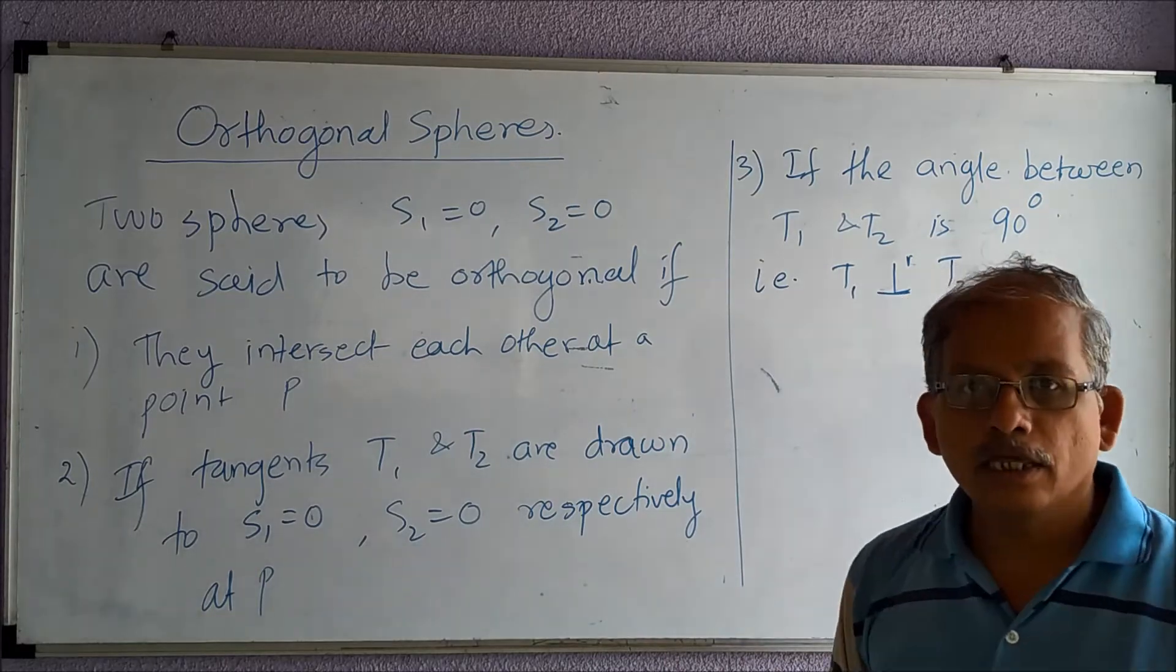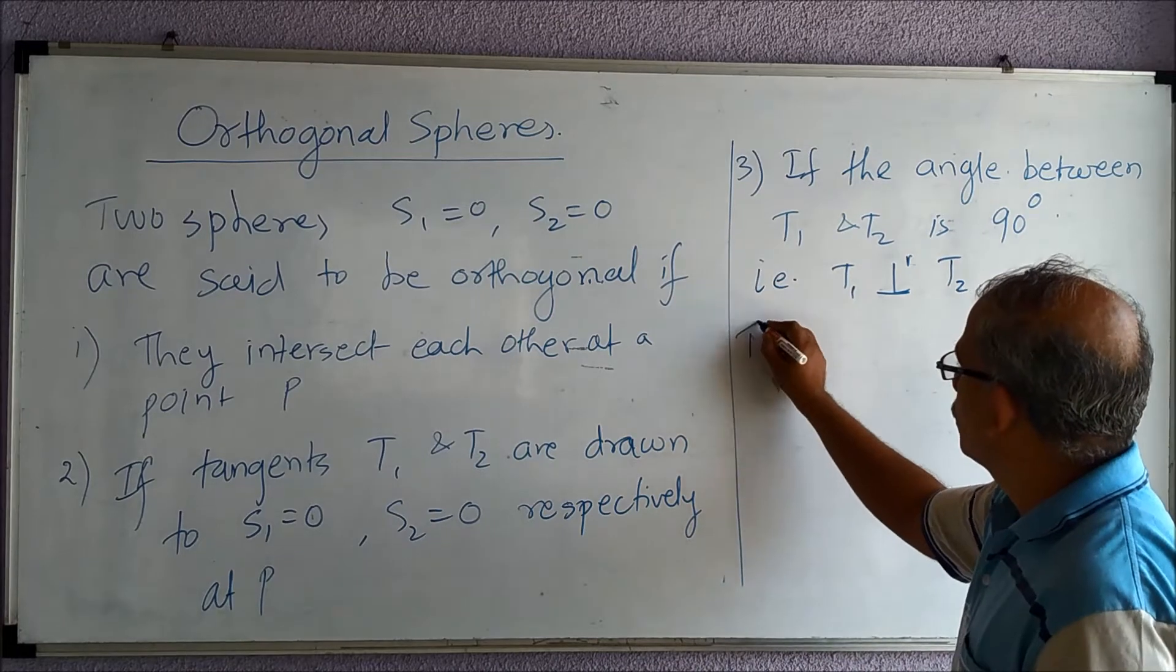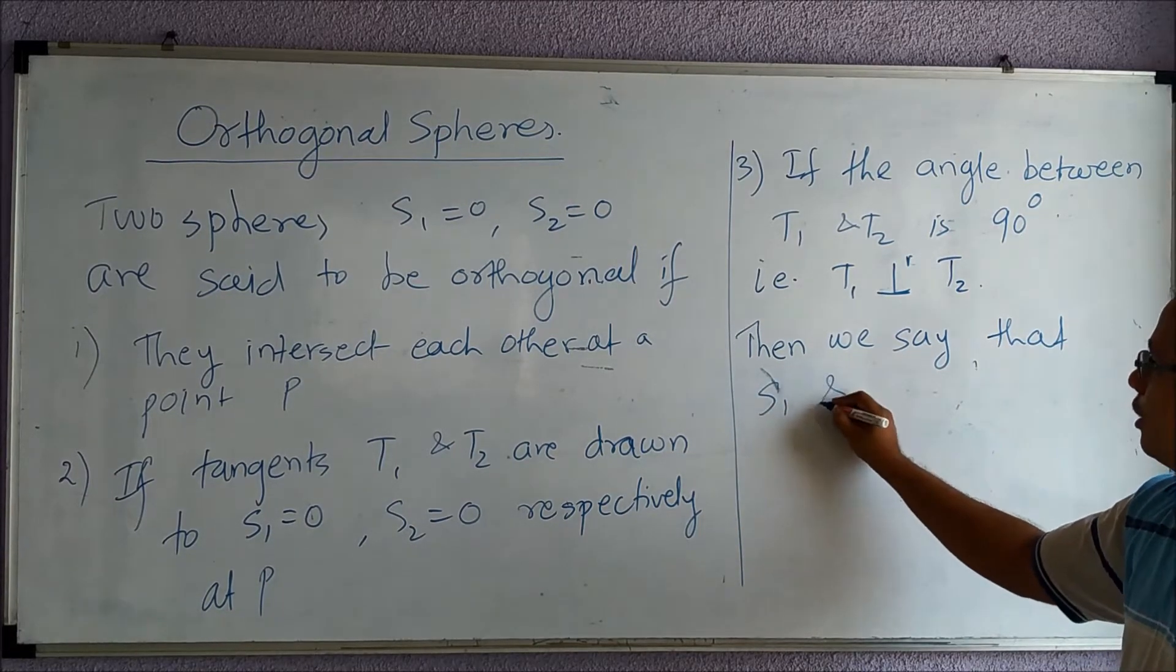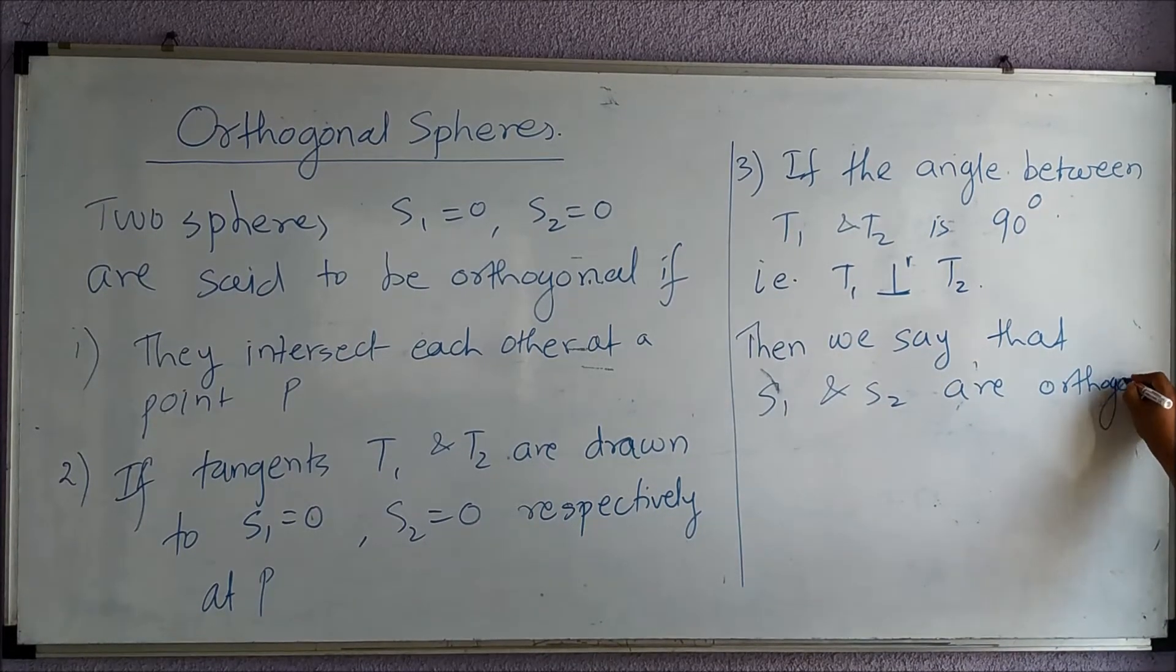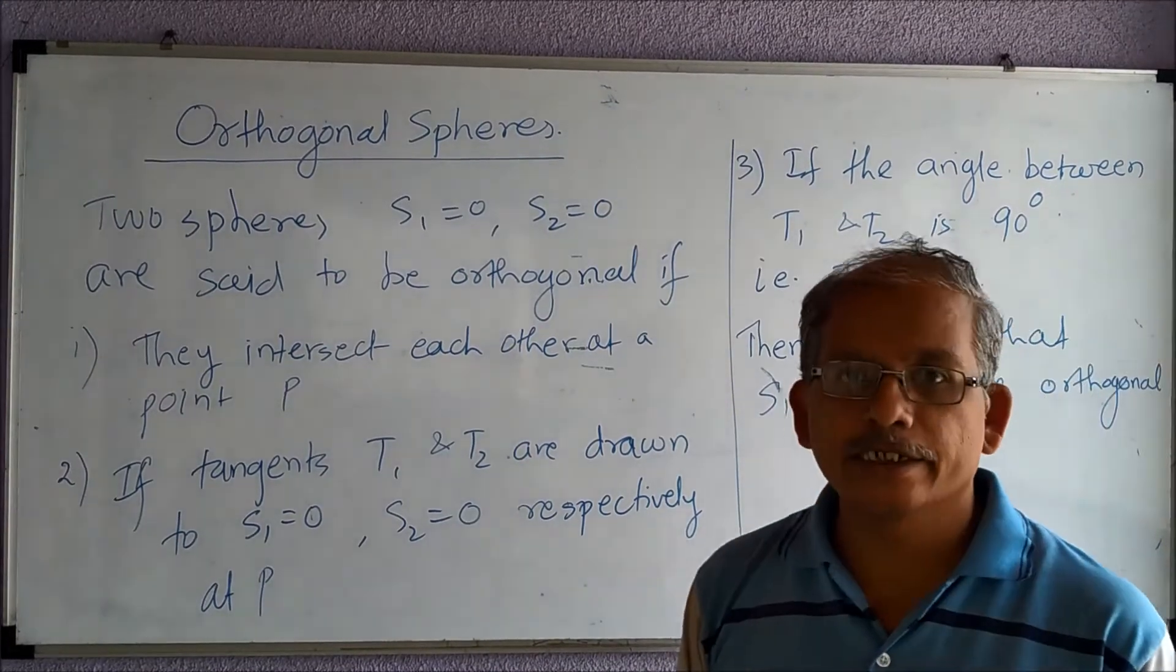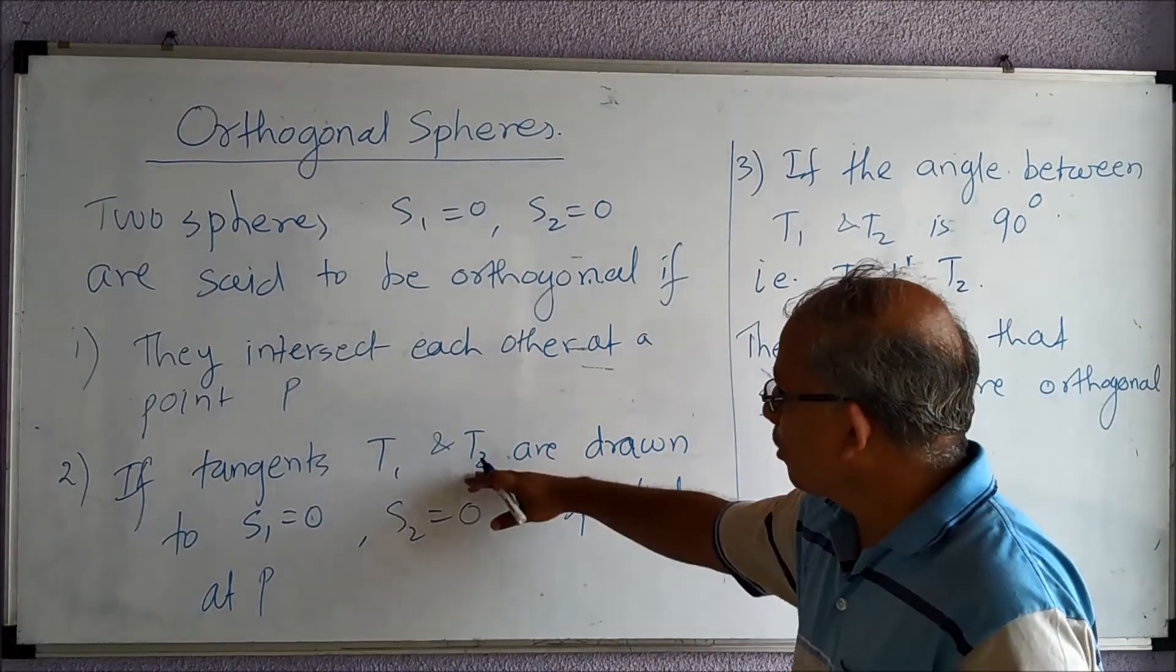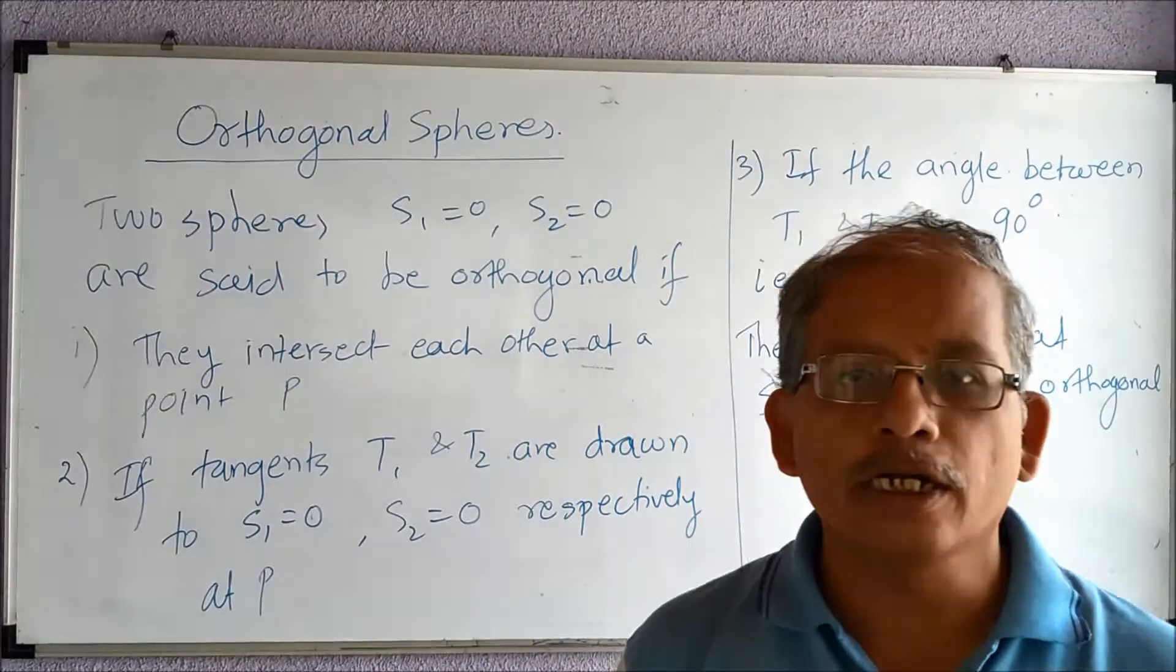Then we say that s1 and s2 are orthogonal. We take two spheres intersecting at a point, draw two tangents to the spheres at that point, and if the two tangents are perpendicular to each other, we say that the two spheres are orthogonal.